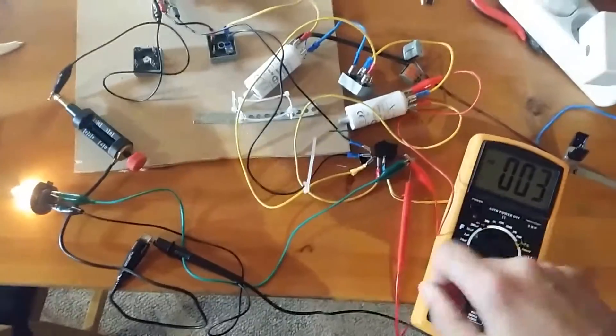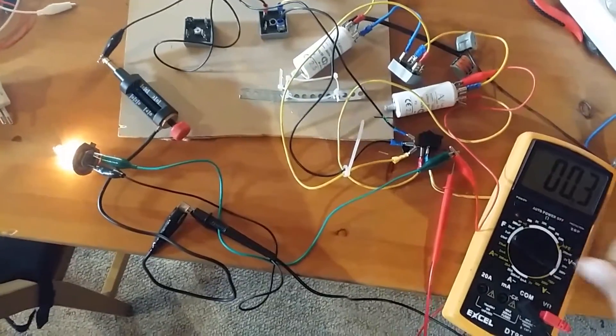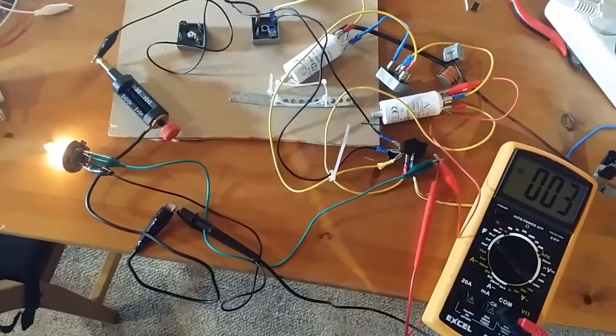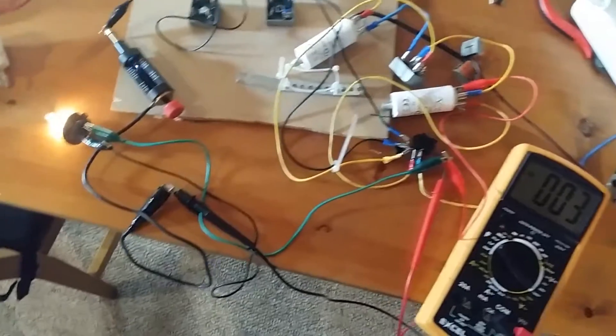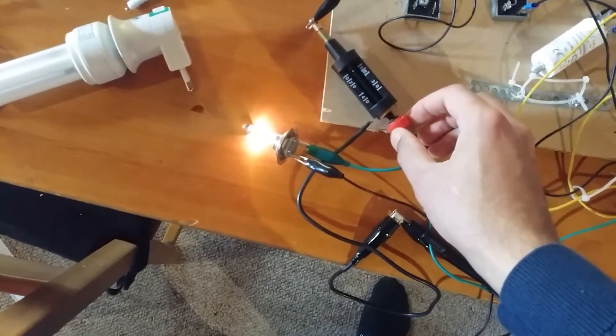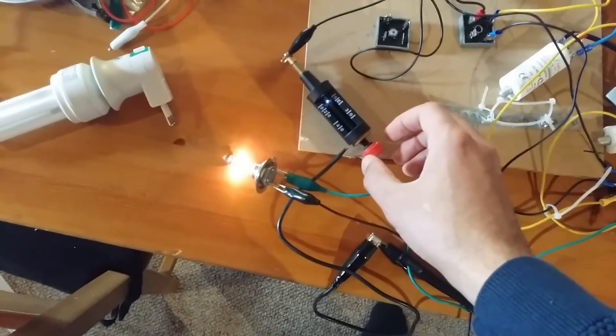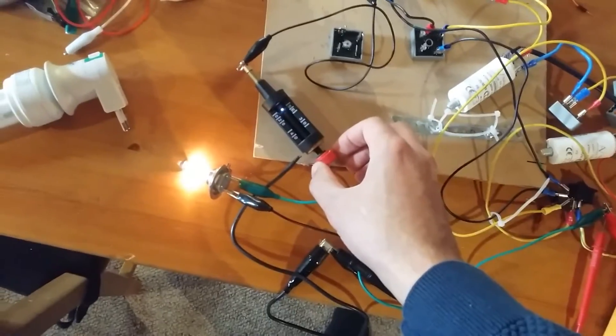The multimeter isn't registering anything. I think the voltages of the spikes are so high that it doesn't register. As you can see, the spark gap makes the amps.